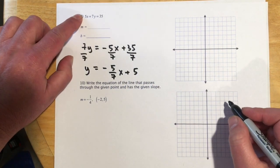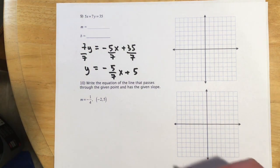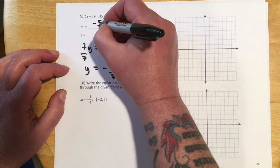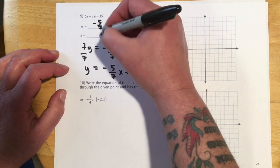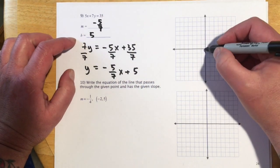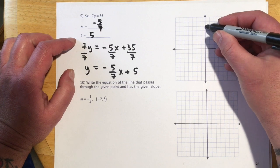And then 35 divided by 7 would be 5. So I was in slope-intercept. Sorry, I was in standard form, and now I'm in slope-intercept. So it looks like my slope is negative 5-sevenths, and my b is 5. So coming up here, when x is 0, y is 5. So 1, 2, 3, 4, 5.